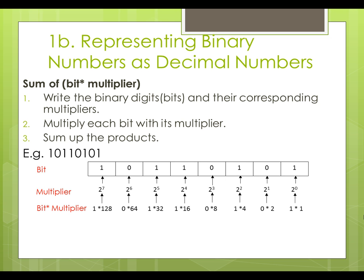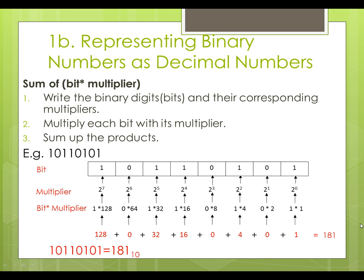Finally, we will add all the products together. The sum of the products is 181. Hence, 10110101 can be represented as 181 in decimal.